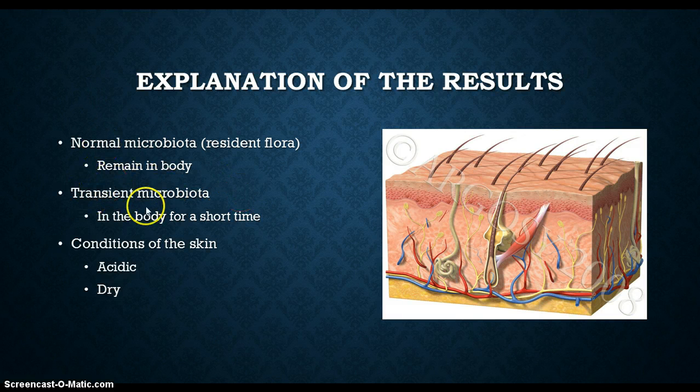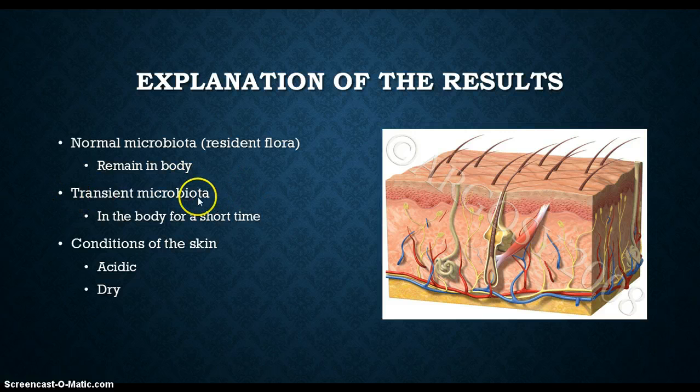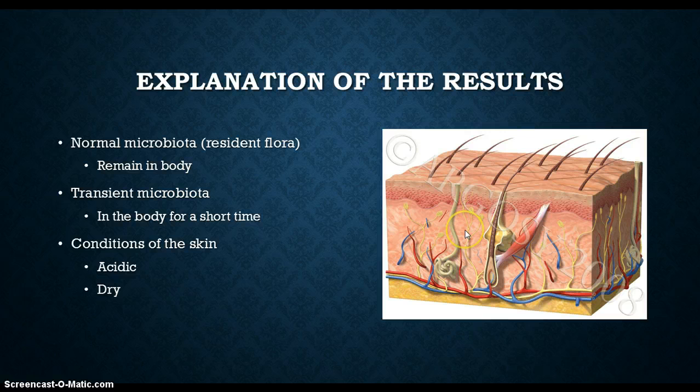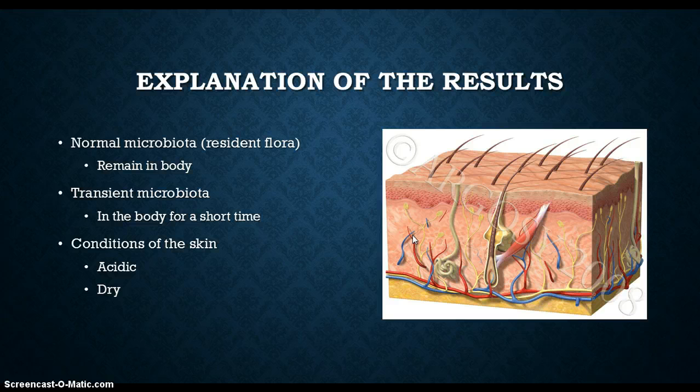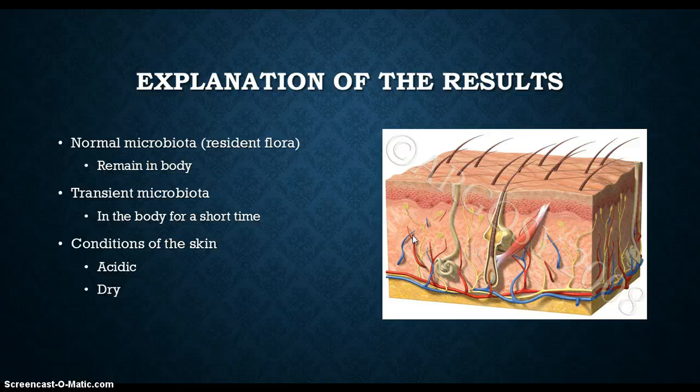The other type of bacteria are transient microbiota. They are in your body but then are removed eventually. That's like stuff on your hands, in that there are bacteria on your hands, you wash them away, and then they are no longer there.